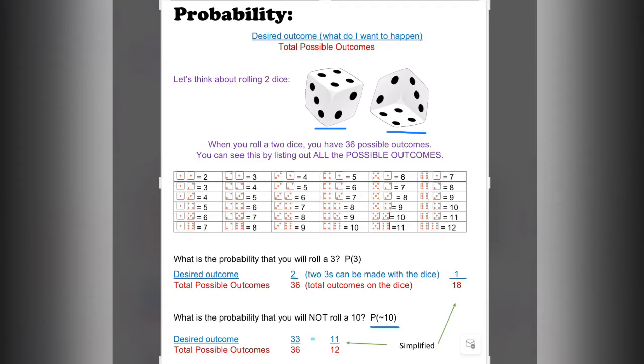What's the probability that you'll NOT roll a 10? Do you see this squiggly line in front of 10? That means not. I'm going to cancel out all the 10s. There are three of them. There are 36 chances, so 36 minus 3 gives me 33. I have 33 out of 36 total chances, which in simplest form gives me an 11 out of 12 chance of rolling anything but a 10.